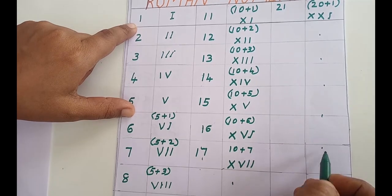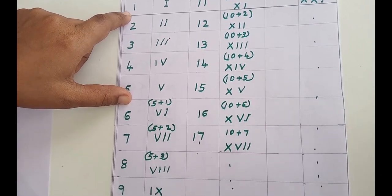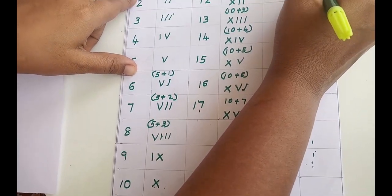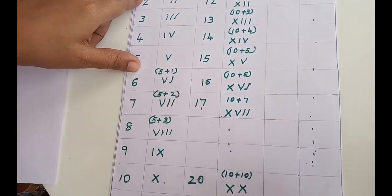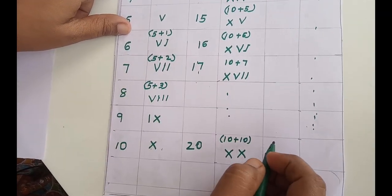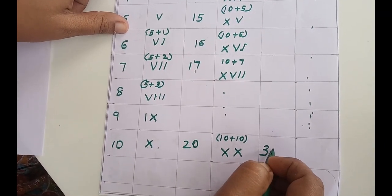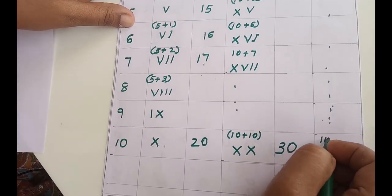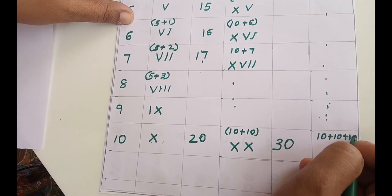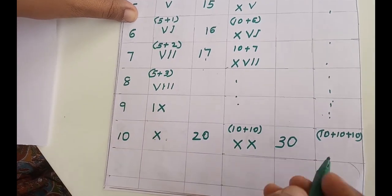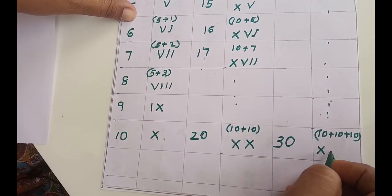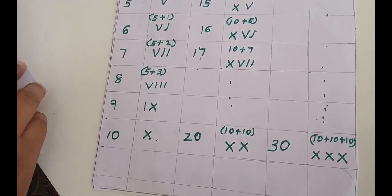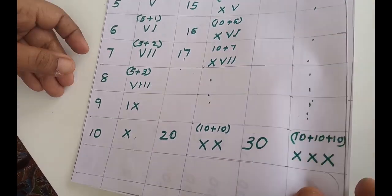You can continue this pattern by yourself — it will be easy. Continuing: 30 is 10 plus 10 plus 10, so three X's — XXX.